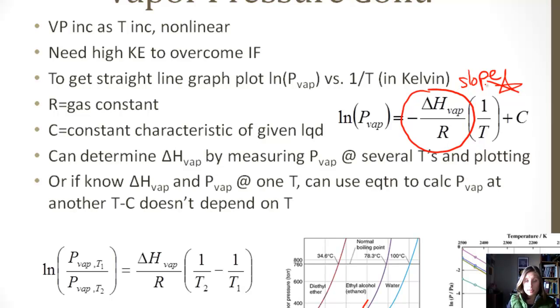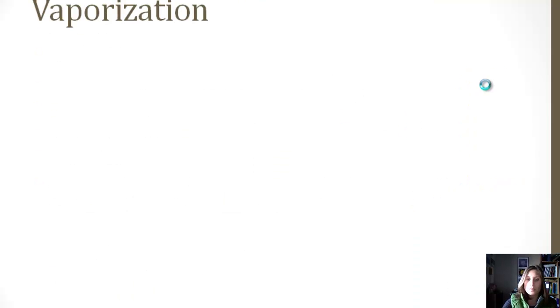Or, if you know the delta H of vaporization and the vapor pressure at one temperature, you can then use the equation to calculate the vapor pressure at any other temperature. And C doesn't depend on T. Remember, C is just based on the given liquid.